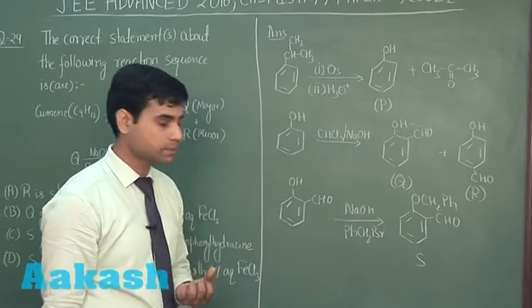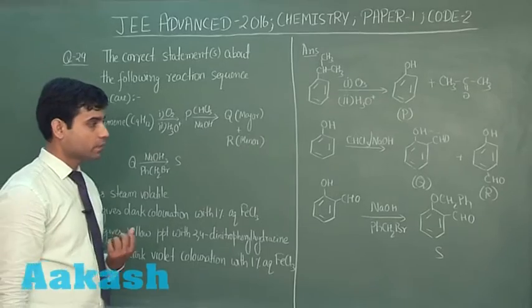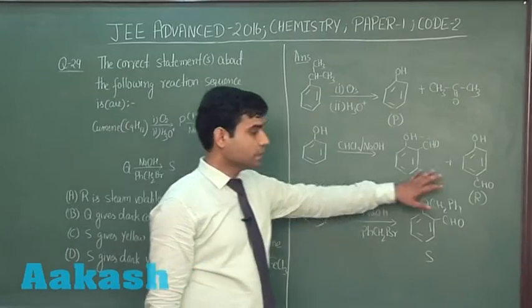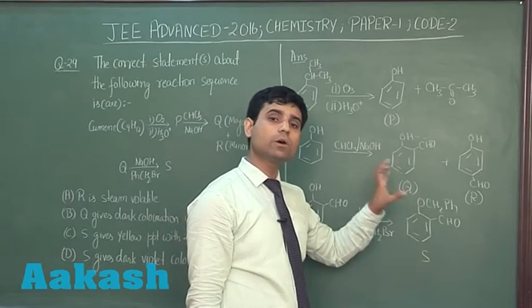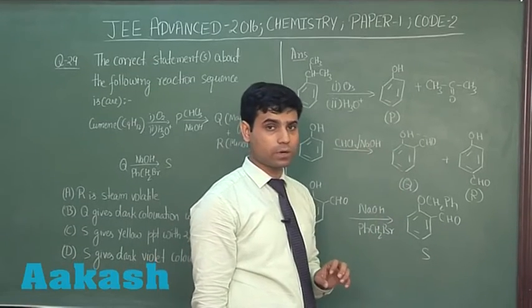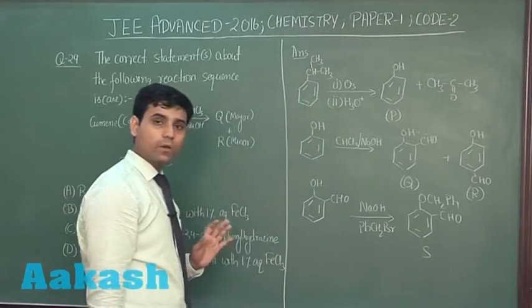Now let us go through the options. The first option says R is steam volatile. If I consider R in this case, R has intermolecular hydrogen bonding. Because of strong intermolecular hydrogen bonding, it is not steam volatile. Option A cannot be the correct answer.